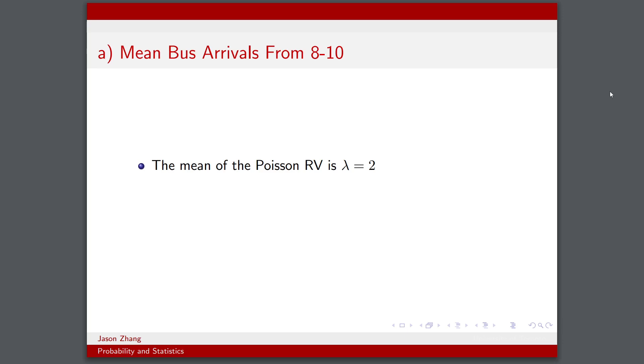So a lot to cover here, but fear not because these questions aren't super complicated. It's just being able to understand these different probability distributions. For the mean bus arrival time from 8am to 10am, we know that the mean of a Poisson random variable is simply λ. In this case we're given λ = 2, which means that on average two buses will arrive every hour.